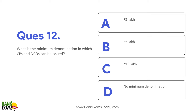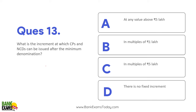What is the minimum denomination in which CP and NCD can be issued? Minimum denomination in which CP and NCD can be issued is five lakh rupees. Five lakh rupees ki minimum denomination pe issue ho sakte hai, aur uske baad in the multiples of five lakhs - five lakhs, ten lakhs, fifteen lakhs, twenty lakhs - aise issue ho sakte hai.